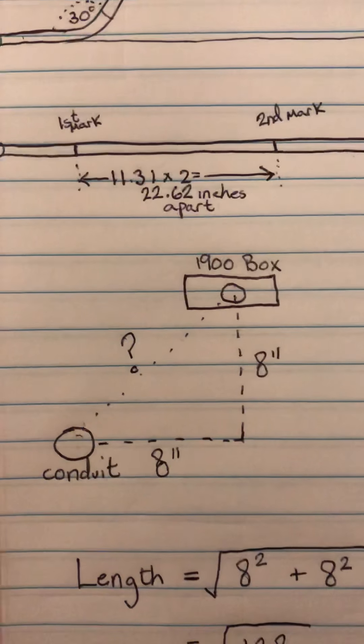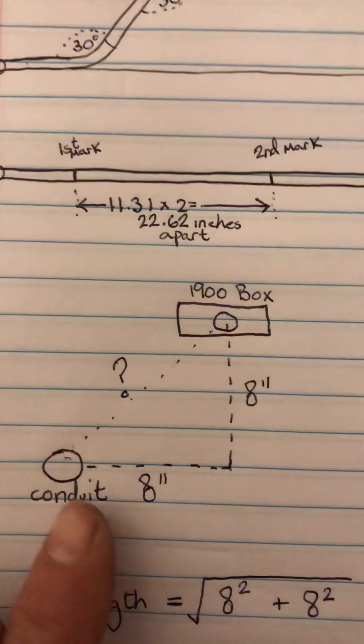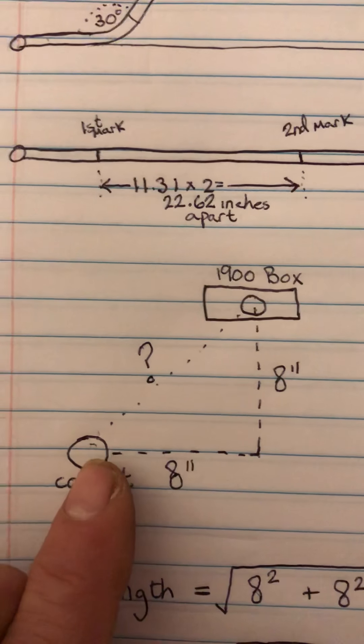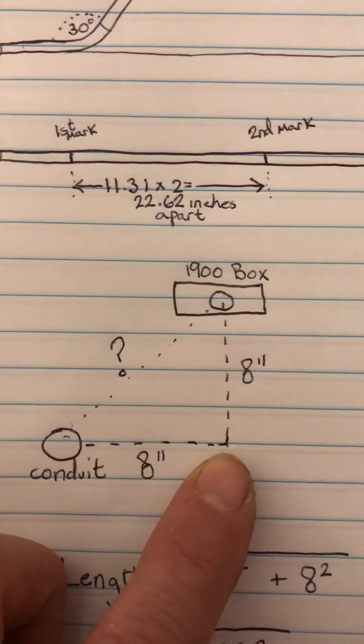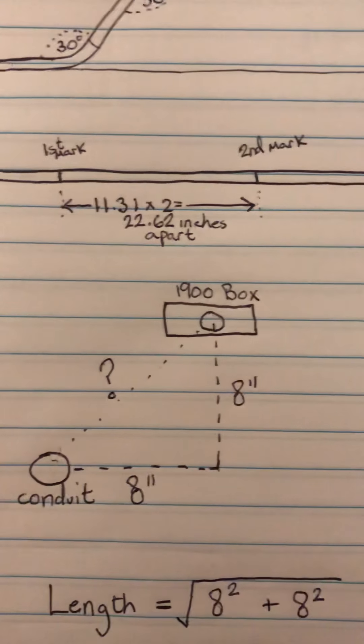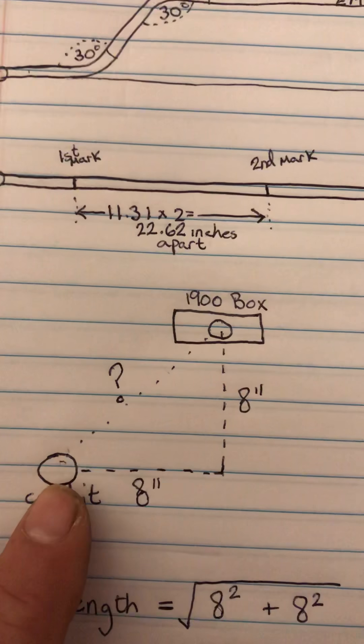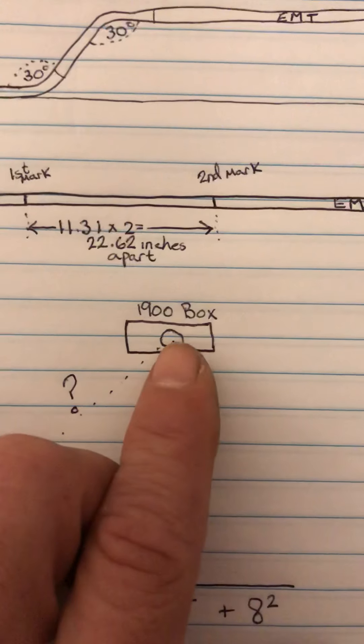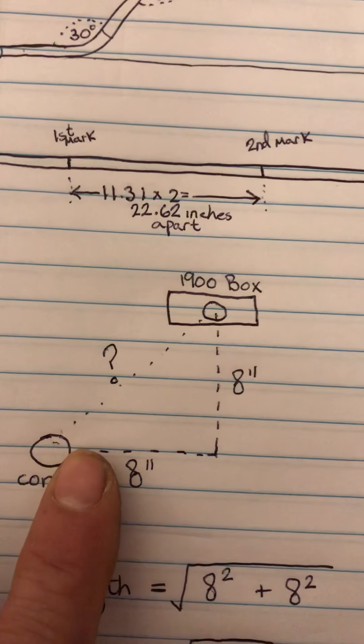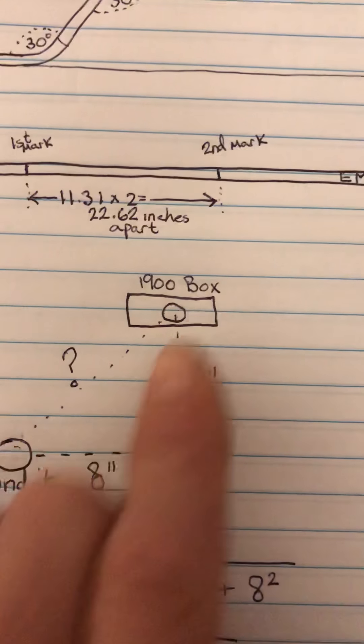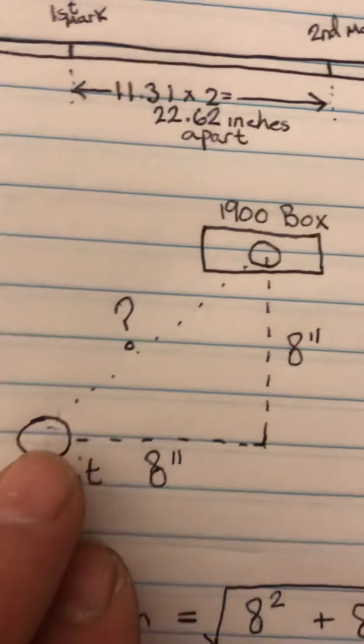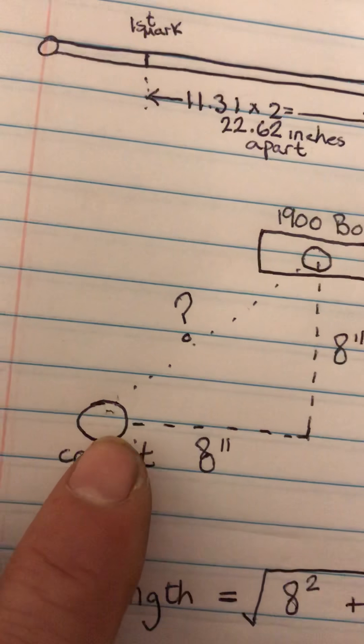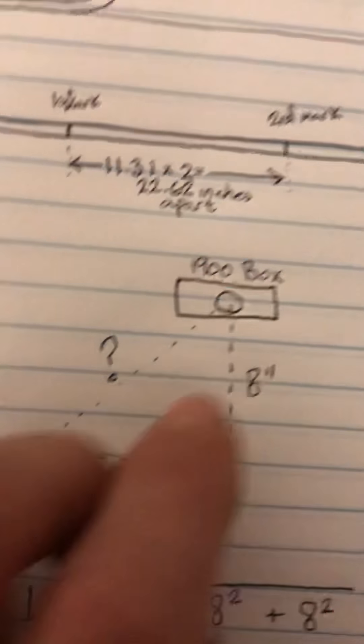First, we take our tape measure and measure over how far we need to go to the 1900 box hole. You can measure center to center, or side of conduit to side of hole. However you do it, wherever you place your tape measure here, you need to place it there too - that'll give you an accurate measurement.